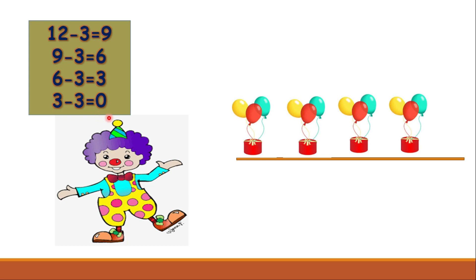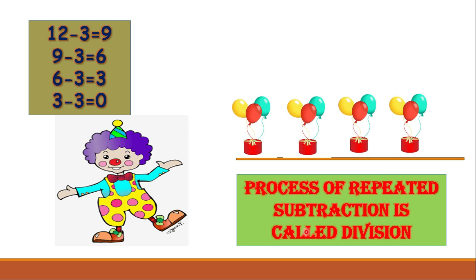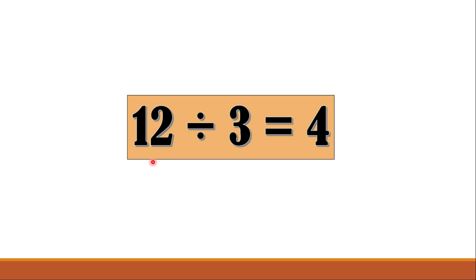Again he ties the remaining three balloons, and oh — he has zero balloons left in his hand! Did you notice, children? When Ethan tied 12 balloons into equal groups of three, he got four groups: group one, group two, group three, and group four. We tied the same number of balloons repeatedly — this is repeated subtraction.